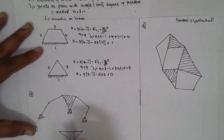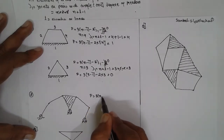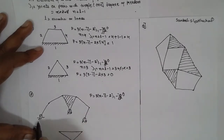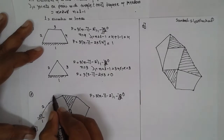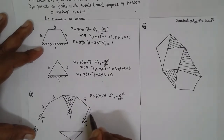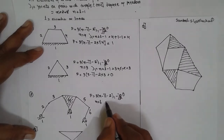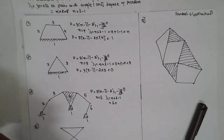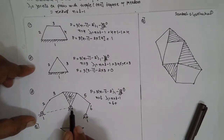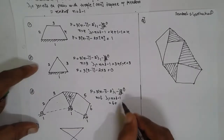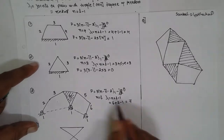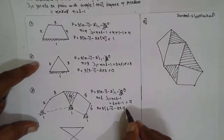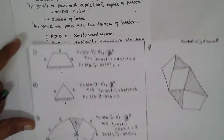Third problem. Formula: f = 3(n − 1) − 2·j1 − j2. j2 = 0. Number of links: the fixed links are counted as 1, and moving links are 2, 3, 4, 5, 6 — so n = 6. For j1 = n + l − 1: draw a dotted line to identify loops. There are 2 loops, so j1 = 6 + 2 − 1 = 7. Substituting: f = 3(6 − 1) − 2(7) = 15 − 14 = 1. Constrained motion.